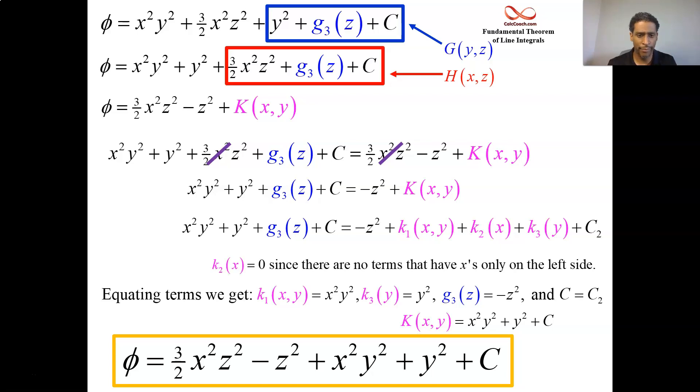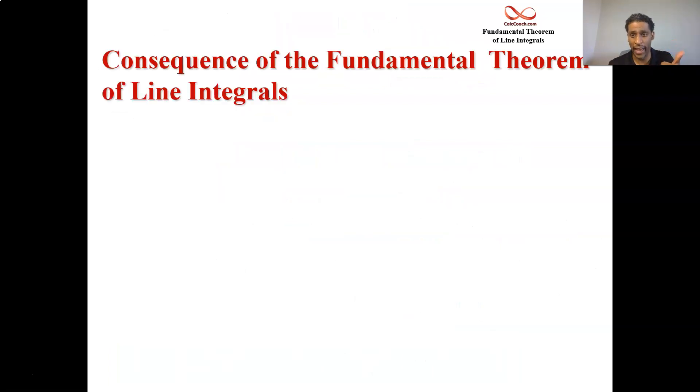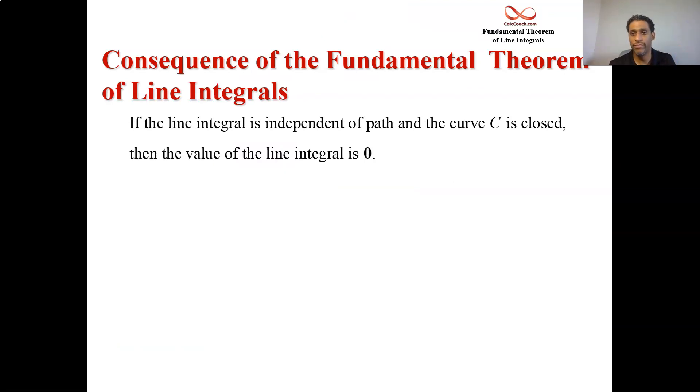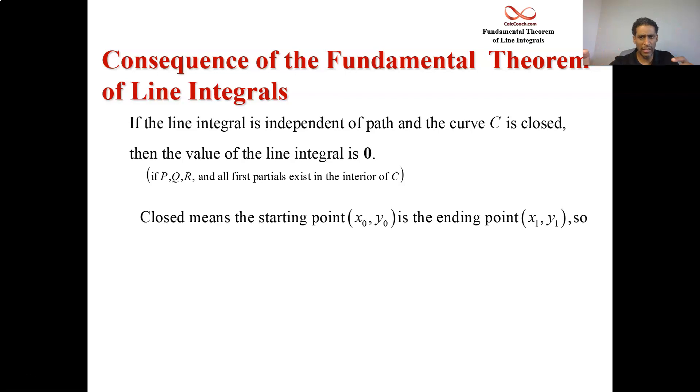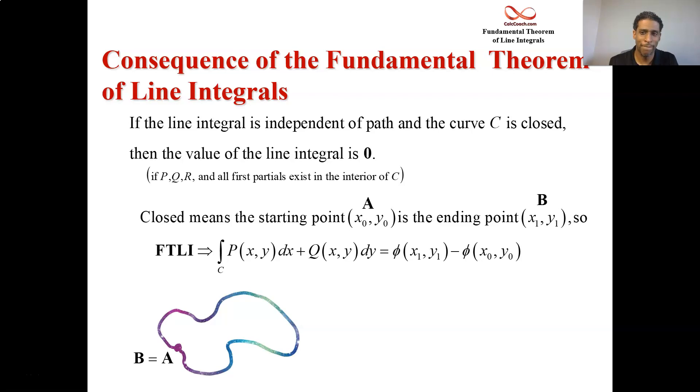If ever you are integrating a line integral that is closed and it's independent of path, then the integral was automatically zero. Just think of how the fundamental theorem of line integrals work. You're supposed to take the starting point, plug it into phi, take the ending point, plug it into phi. But if your starting point and your ending point is the same, you know, if you're closed, then it'll be zeroed out. If x1, y1 is the same as x0, y0, then it's going to zero out.